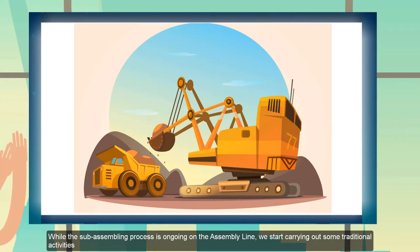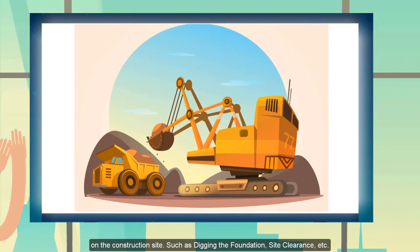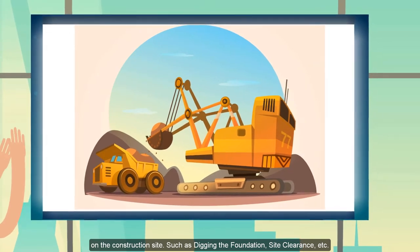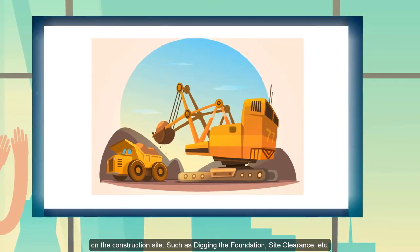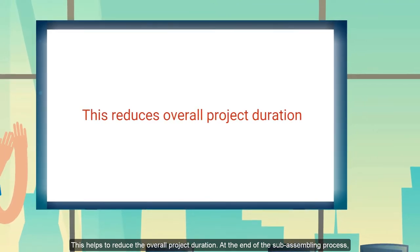So while we carry out assembly on the assembly line, we begin to carry out some traditional processes on the site. Such activities include laying the foundation and site clearance. We carry them out simultaneously, which helps to minimize the amount of time spent on the project.